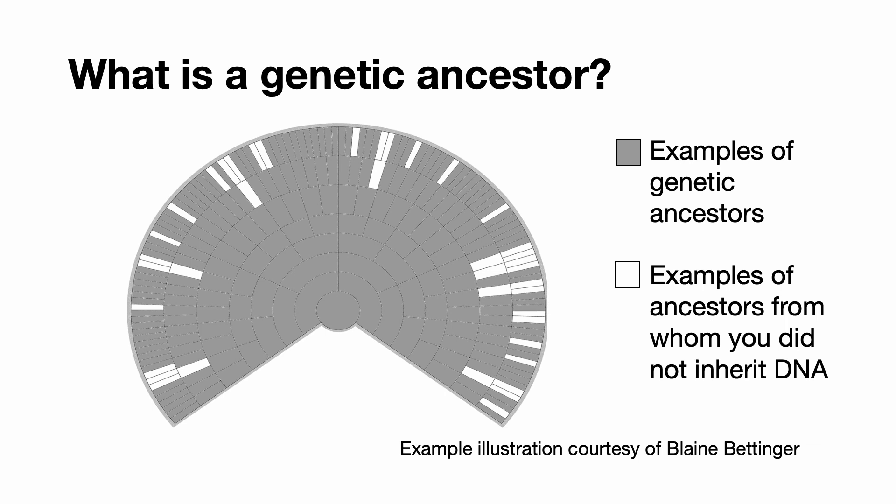Now, slightly counter-intuitively, this doesn't actually include all of your direct ancestors. Due to the randomness of recombination, certain ancestors will actually have left no traces in your DNA at all. They are of course still your ancestors, but due to this genetic chance you just don't happen to have inherited any DNA from them.